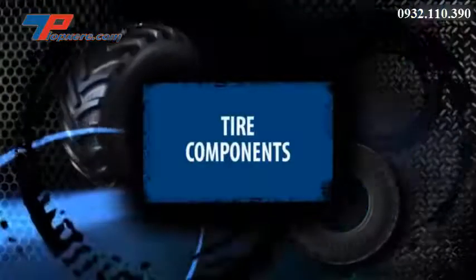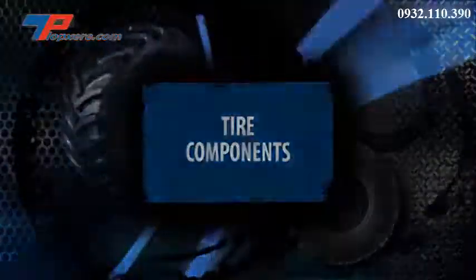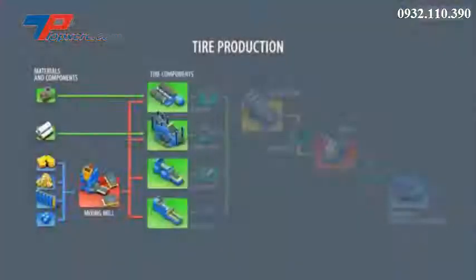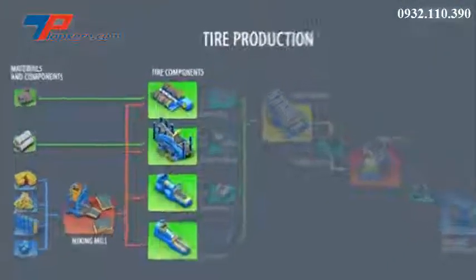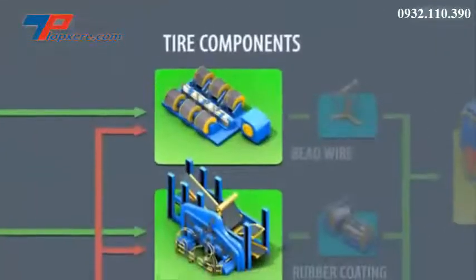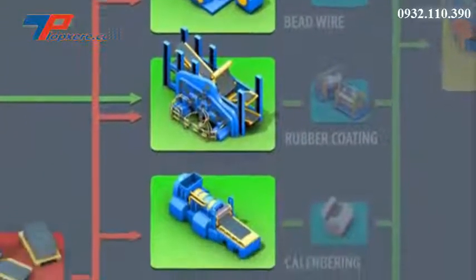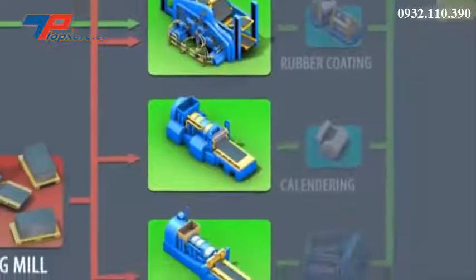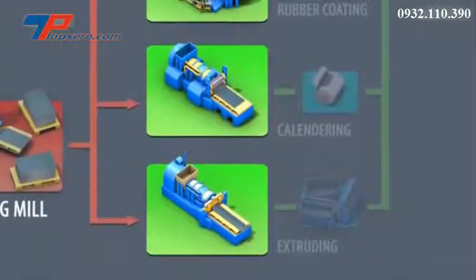Next, the basic components that make a tire are shown. The components are produced during further processing. These are bead wires and rubber coated cord; other components are extruded and calendered from various rubber compounds.